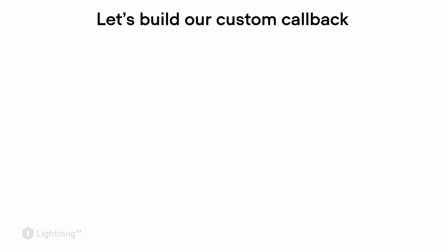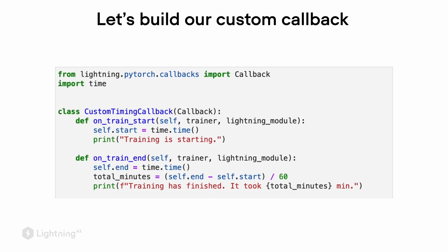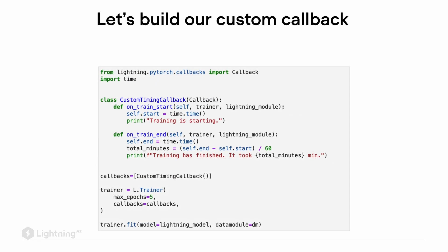How about defining a custom callback? Here we are defining a callback that prints the total training time. This callback has two methods: the onTrainStart and the onTrainEnd method. The onTrainStart method will be executed when we call Trainer.fit, and it will save the original timestamp when we start our model training. It will also print the phrase 'training is starting.' For the onTrainEnd method, it will compute how much time has passed since we started the training and then automatically print the training time. All of this will be executed by the trainer once the training has completed. Just like before, we can provide this callback as an argument to the Trainer class.